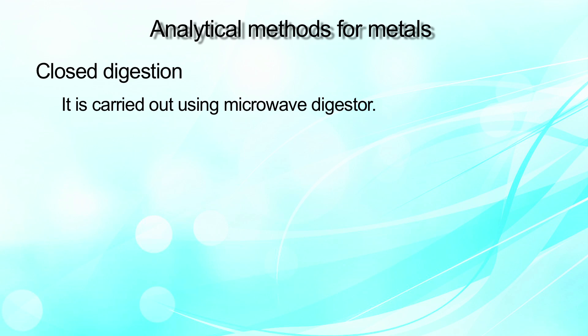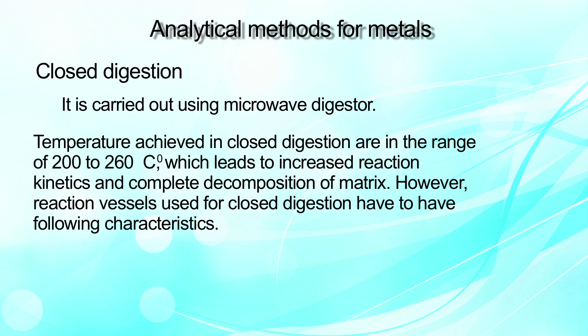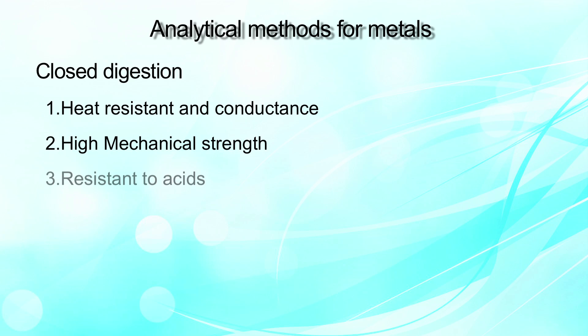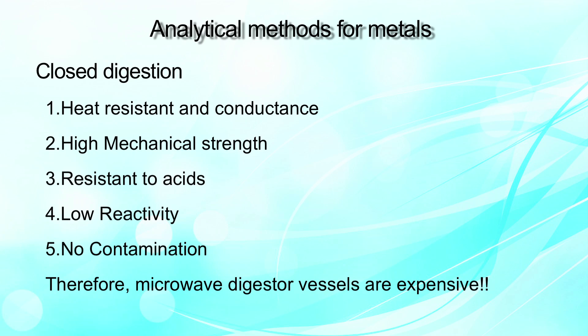Closed digestion can be carried out using a microwave digester. Temperatures achieved in closed digestion range from 200 to 260°C, leading to better reaction kinetics and complete decomposition of the matrix. However, reaction vessels used for closed digestion must have certain specific characteristics: they need to be heat resistant, have high mechanical strength so they don't explode, be resistant to acids, have low reactivity, and should not cause contamination into the food matrix being digested. That is why these digestion vessels are quite expensive.